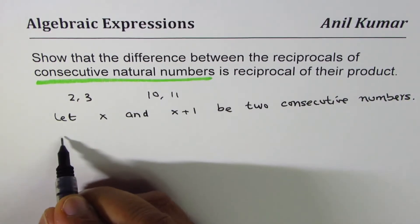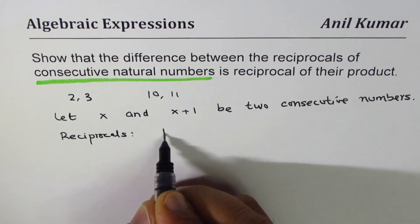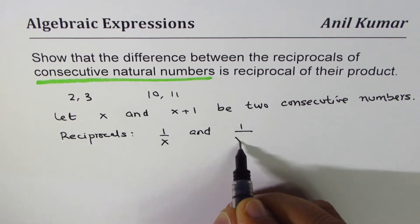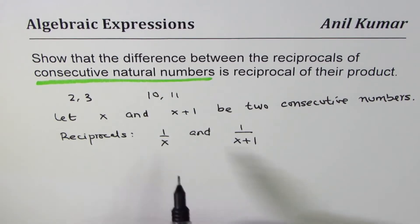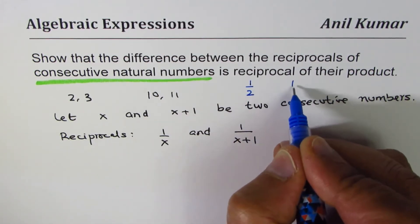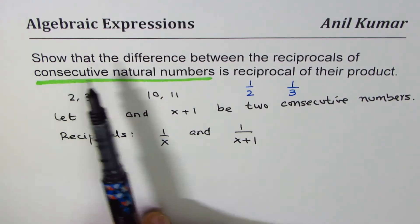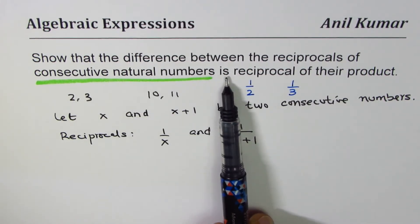The reciprocals will be one over X and one over X plus one. For example, if we take the numbers 2 and 3, the reciprocals are one over two and one over three.